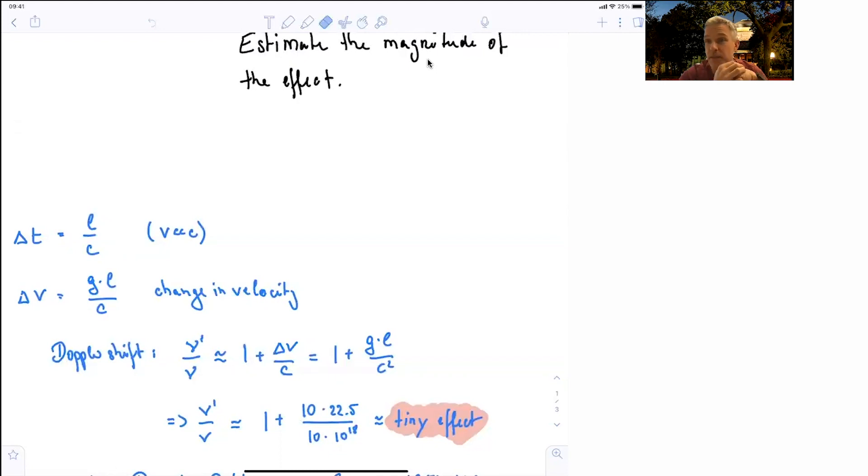The speed of light is pretty fast, 3 times 10 to the 9 meters per second, and this distance is only 22 and a half meters. So we find that this is a tiny, tiny effect. But nevertheless,